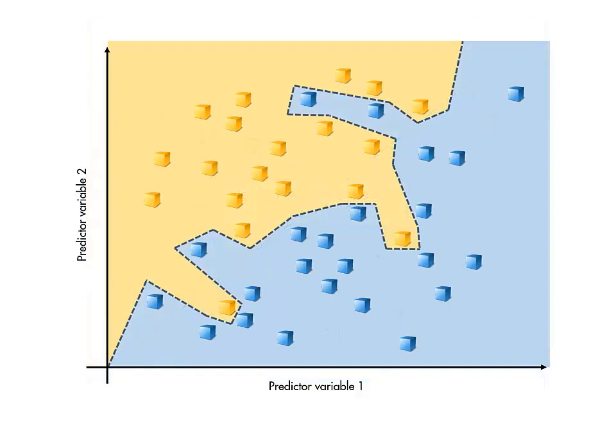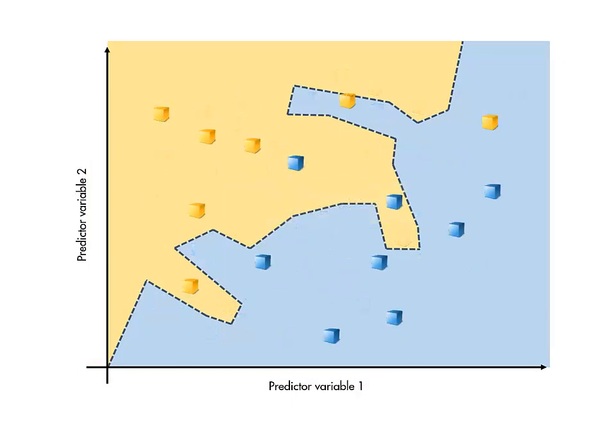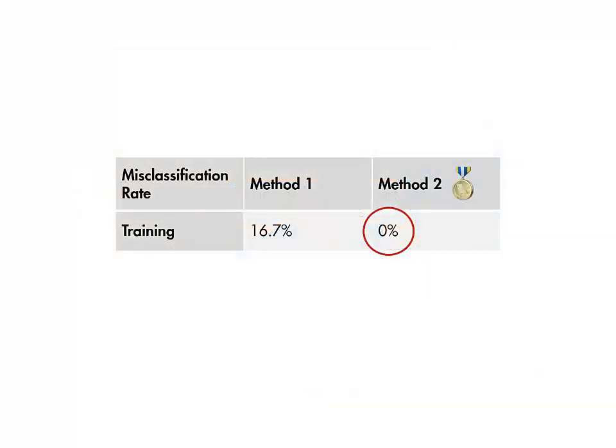In contrast, a complex model trained to perform perfectly on the training data performs worse than the simple model on the validation data. This confirms our intuition that the simple model generalizes better to new data.